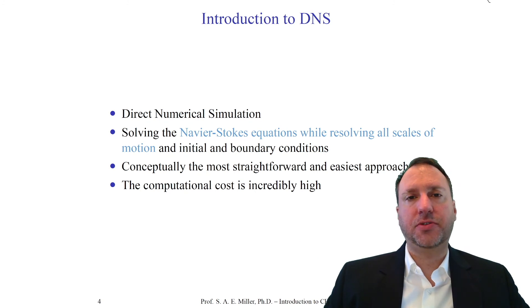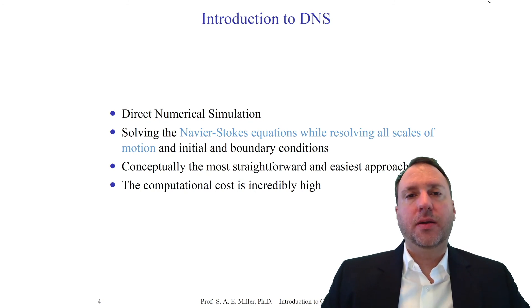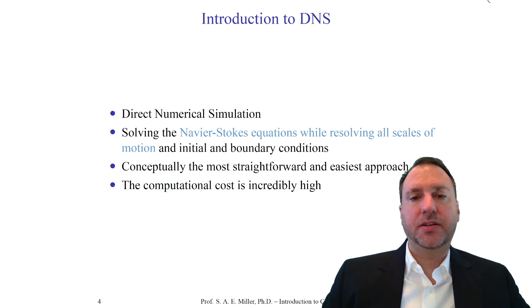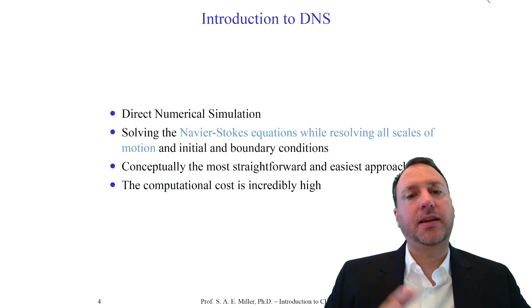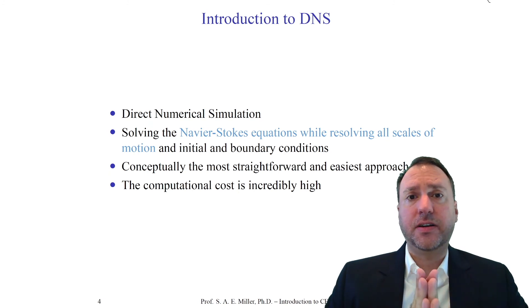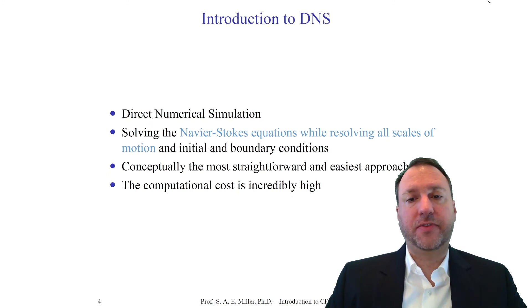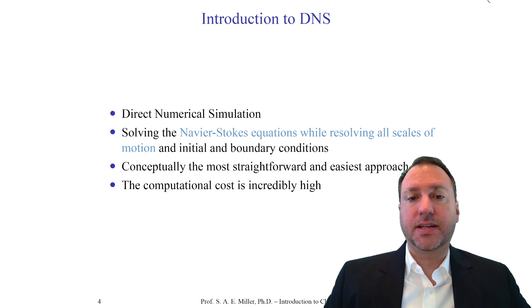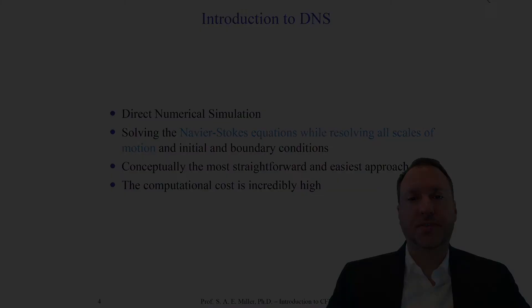The computational cost is going to be very, very high. That's because of the turbulence cascade and the many decades of turbulence length scales, from the very small scales all the way up to the very largest scales. For these reasons, DNS will be the most computationally intensive simulations.